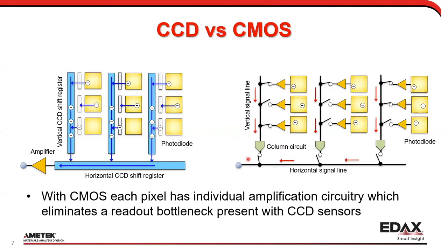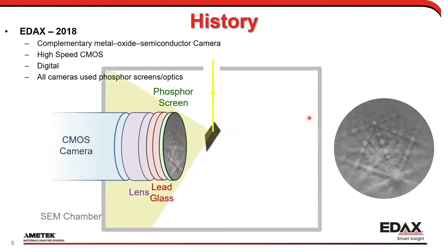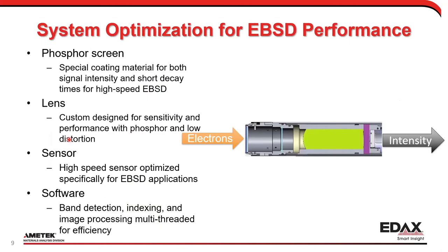Five years ago, CMOS pixel preamps were too noisy for EBSD. But as time went on, CMOS cameras got better and better, and when they got good enough we said, let's start using high-speed CMOS cameras for EBSD. These cameras all use the phosphor screen technology — a phosphor screen connected to a lens — and the key thing I'll mention later is the Clarity detector, which gets rid of the phosphor screen and lens entirely.